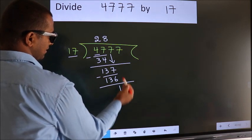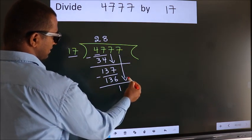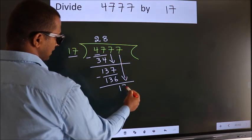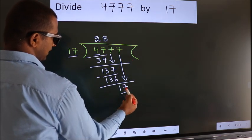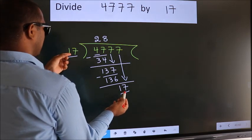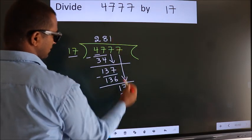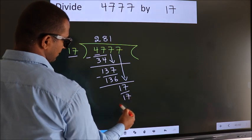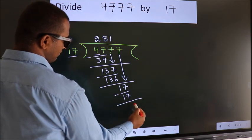After this, bring down the next number. So 7 down. So 17. When do we get 17? In the 17 table, 17 times 1 is 17. Now we subtract. We get 0.